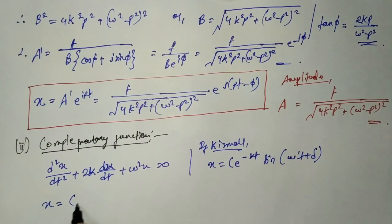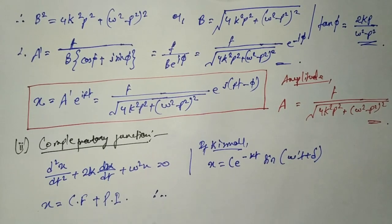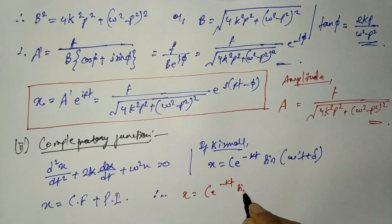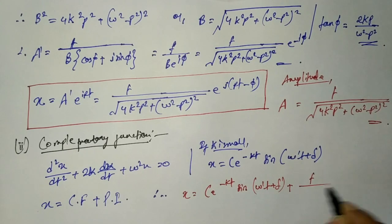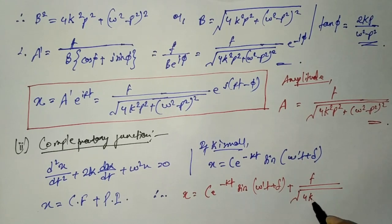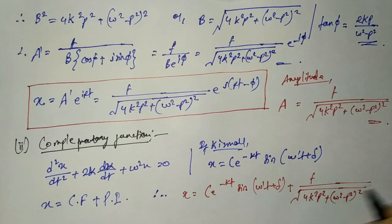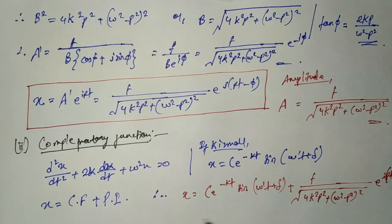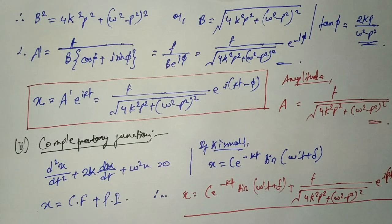The general solution is x = complementary function + particular integral. Therefore the general solution is: x = C·e^(−kt)·sin(ω't + δ) + [f / √(4k²p² + (ω² − p²)²)] · e^(i(pt − φ)). This is the general solution of the equation for forced vibration.